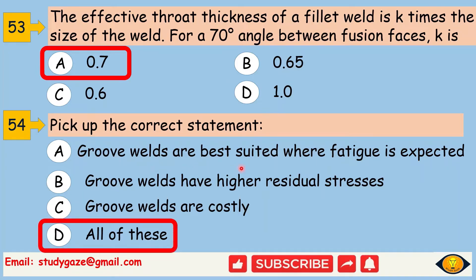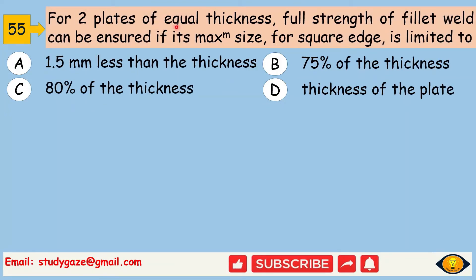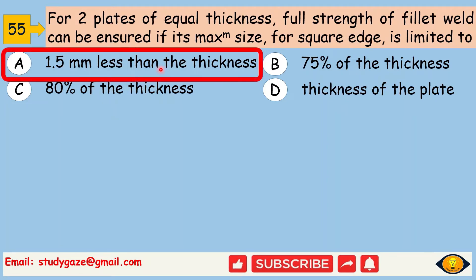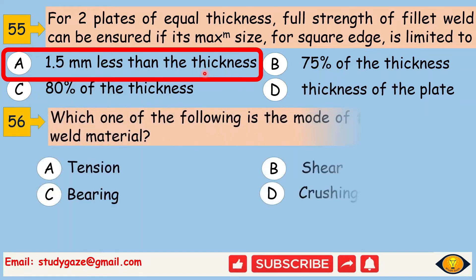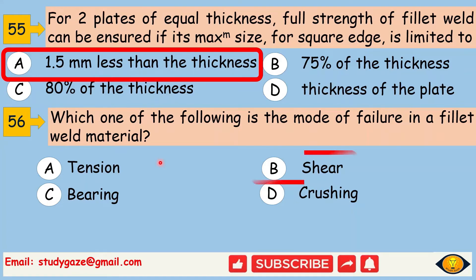Groove welds are best suited where fatigue is expected; groove welds have higher residual stresses; groove welds are costly — so all options are correct. Next, for two plates of equal thickness, full strength of a fillet weld can be ensured if its maximum size for square edge is limited to 1.5 mm less than the thickness. Next, mode of failure in fillet weld material is shear.